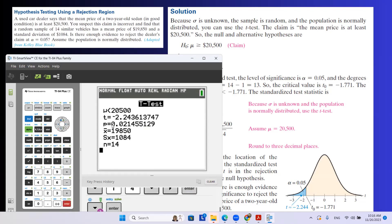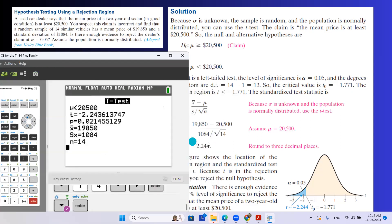So when you do the calculation, this is what you get. And t is negative 2.24, which is similar to what we calculated using the algebra and the formula. And p-value is very small. It's 2%. 2% is less than 5%. So you can easily see that using p-value, you're going to reject the null hypothesis.